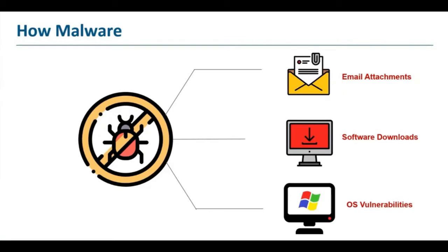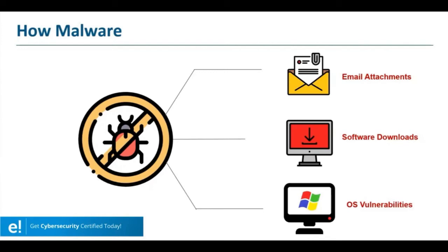Then there are also trojans. This kind of malware disguises itself as legitimate software, or is included in legitimate software that has been tampered with. It tends to act discreetly and creates backdoors in your security to let other malware in. Then we have worms — worms infect entire networks of devices, either local or across the internet, by using the network's interfaces.